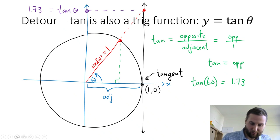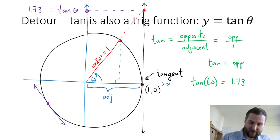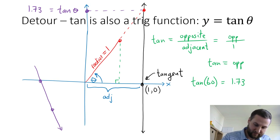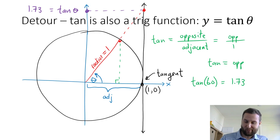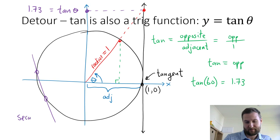A tangent can only touch a curve at one point. If I pick a point and sketch a tangent, it only touches at that one point. But if my tangent wasn't very good and it cuts the curve at two points, then that line is now called a secant — a secant that cuts the curve.